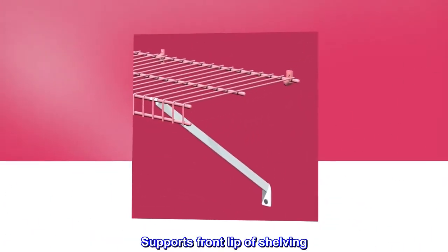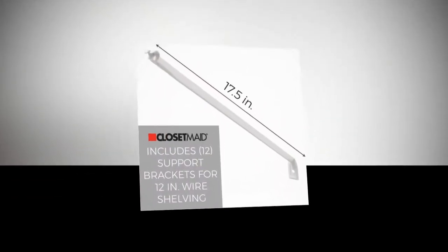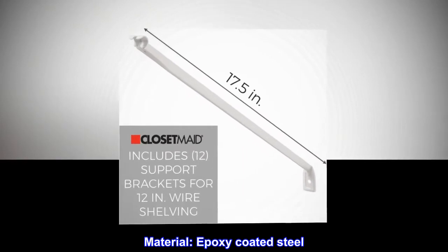Supports front lip of shelving. Use one bracket every 36 inches and at each end of shelf. Material: Epoxy-coated steel.